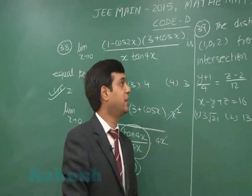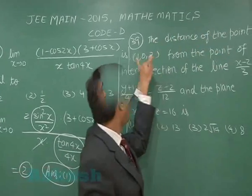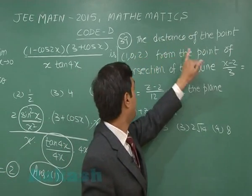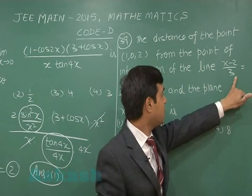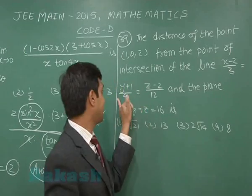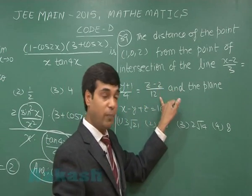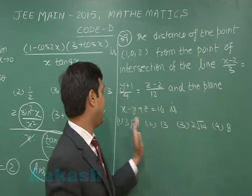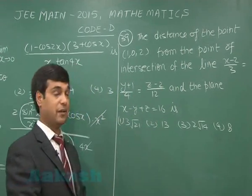Let us go for the next question, that is 39. The distance of the point (1, 0, 2) from the point of intersection of the line (x - 2)/3 = (y + 1)/4 = (z - 2)/12 and the plane x - y + z = 16.